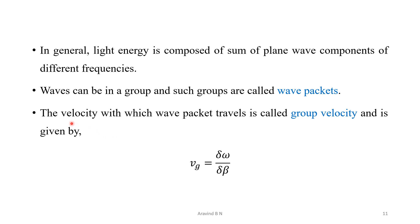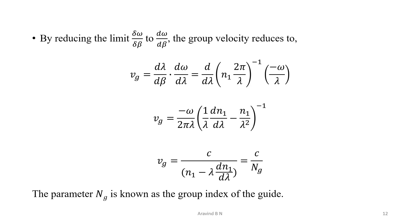Now, defining the group velocity, the velocity with which this wave packet travels is known as the group velocity. It is defined by vg is equal to delta omega divided by delta beta. By reducing the limit delta omega by delta beta to d omega by d beta and simplifying further, it will reduce to vg is equal to c divided by ng, where the parameter ng is known as the group index of the guide.